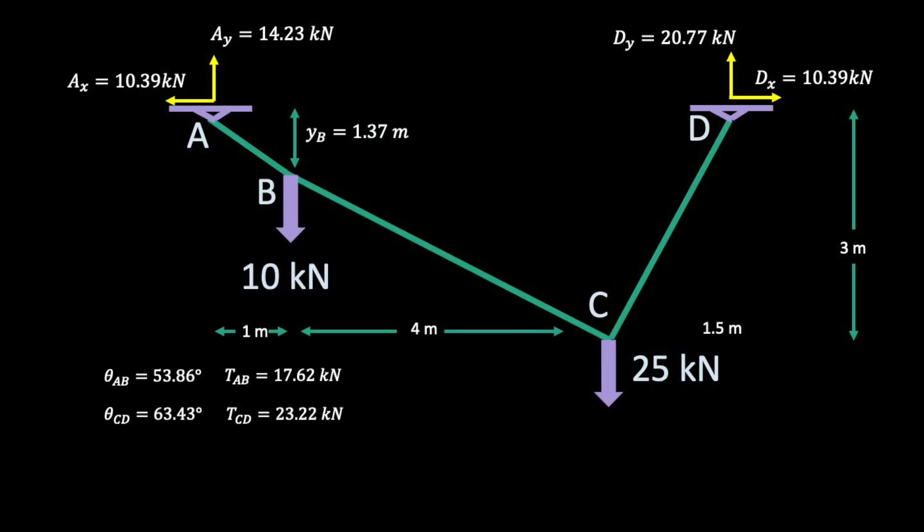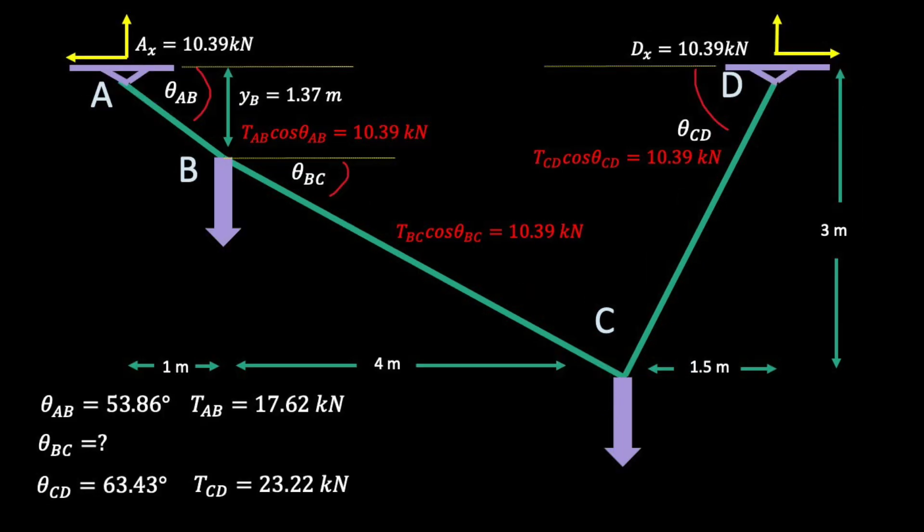The problem asked us to find YB and the maximum tension. We've already found YB, but we've only found two tensions in the cable so far. We could keep going from our joint calculations and solve for all our tension forces to see which one is the largest. Or we could be a little lazy. I prefer to be a little lazy.